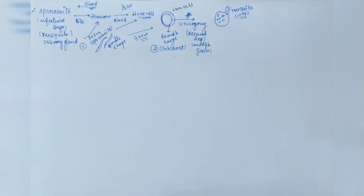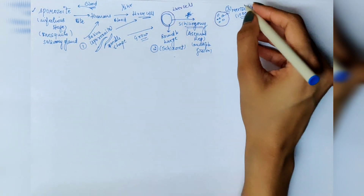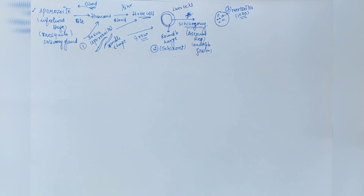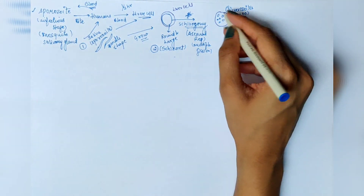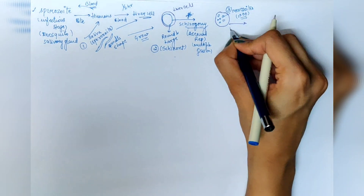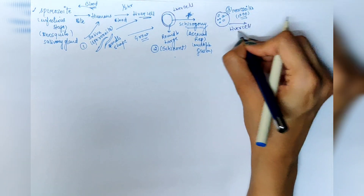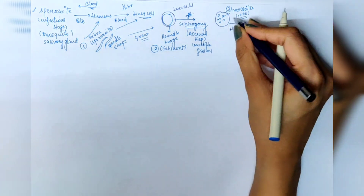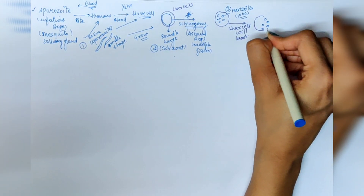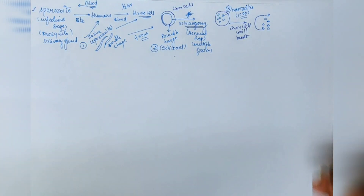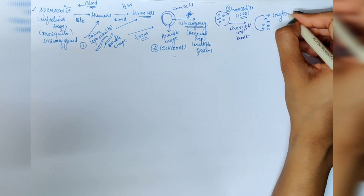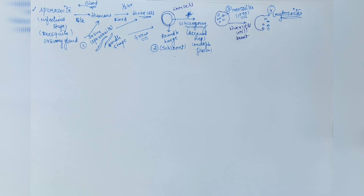Through asexual reproduction, around 1,000 merozoites are produced inside the liver cell. This liver cell will then burst due to the pressure created by so many merozoites filling all the space. When the merozoites come out from the burst liver cell, they are known as cryptozoites.